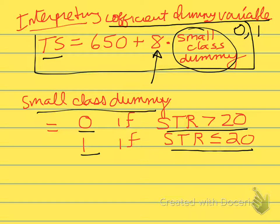So we can see from the coefficient that school districts with small classes, on average, have test scores that are 8 points higher. That's the interpretation of the coefficient.